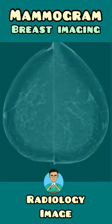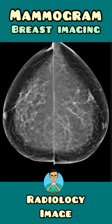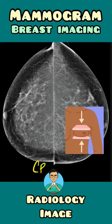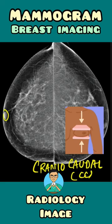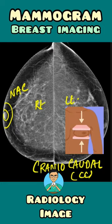Similarly, we have another view which is known as the cranio caudal or CC view. In this view you can also see the nipple areola complex and the breast substance. This is the right breast and this is the left breast. However, you cannot see the pectoralis major muscle in this view.